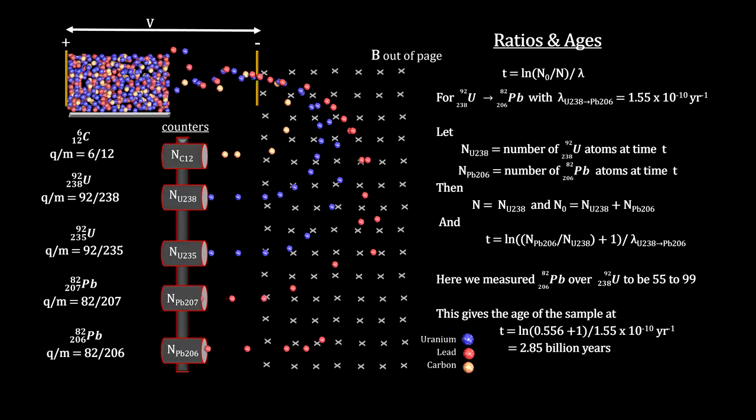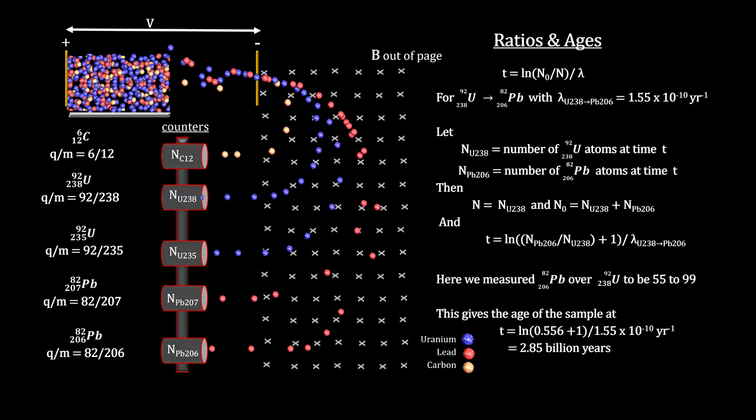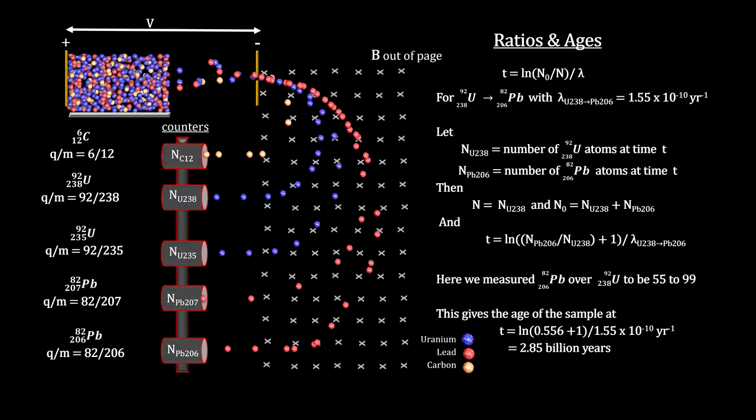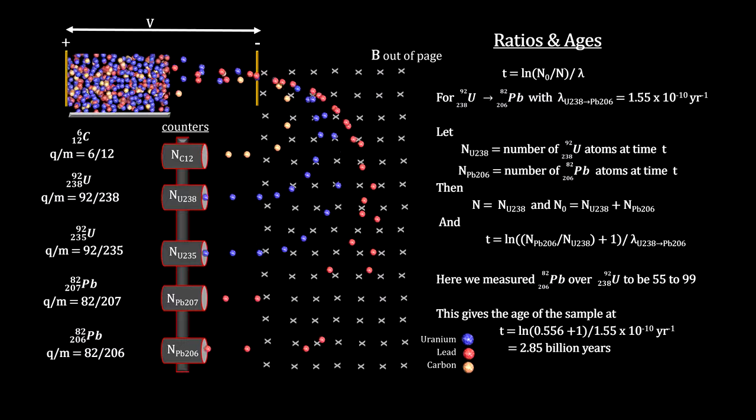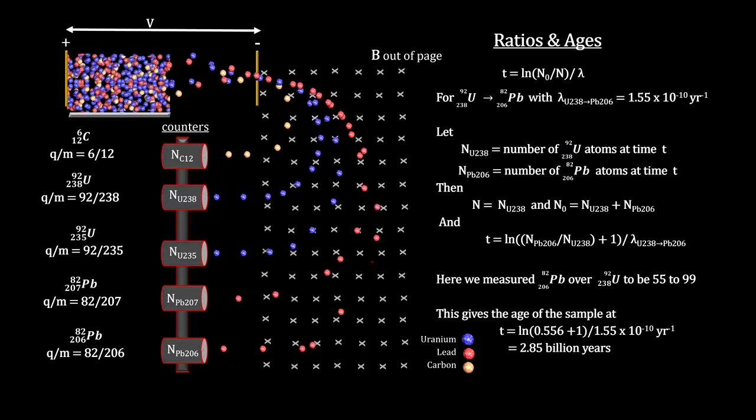They are in agreement to within .35%. When they agree like this, you know you have a good measurement. This natural cross-check gives geologists an extremely accurate dating method.